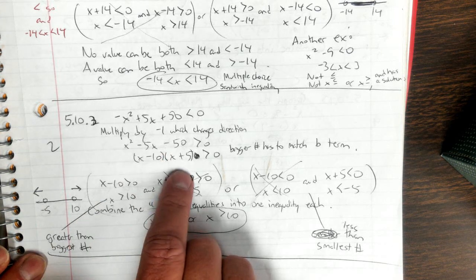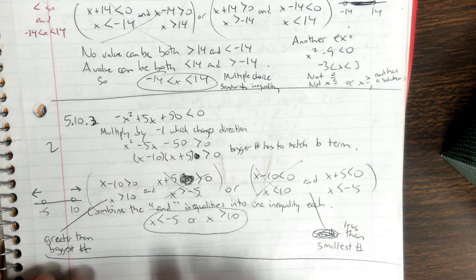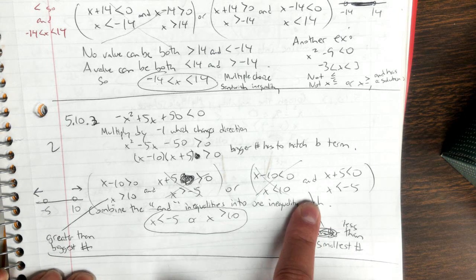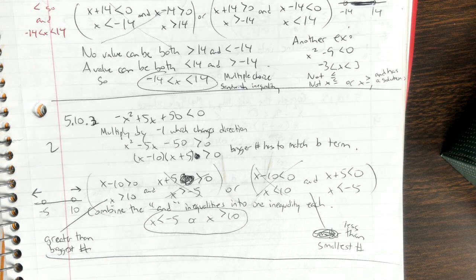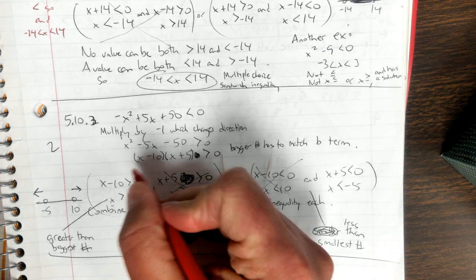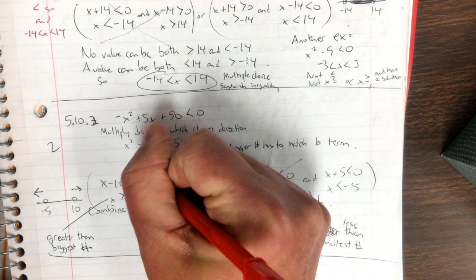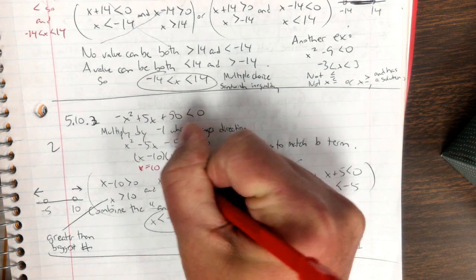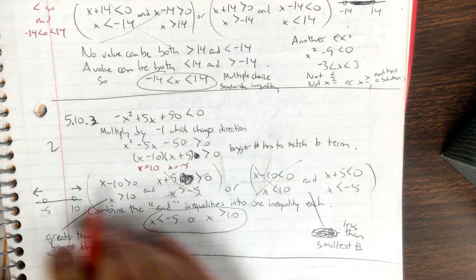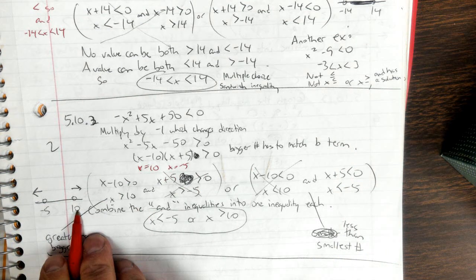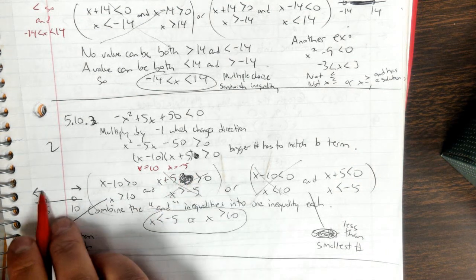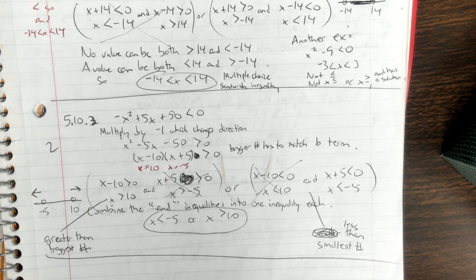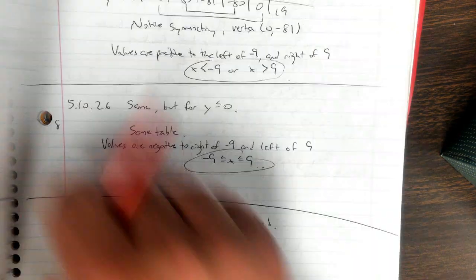Because all you do is switch your signs. So notice that x equals 10 and x equals negative 5. Put the biggest one on the right, the smallest one on the left, and since it's greater than, it goes like that. That's the first two problems.